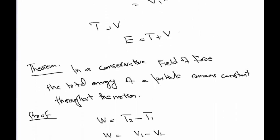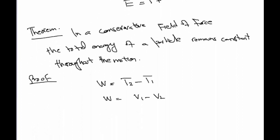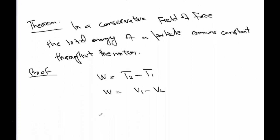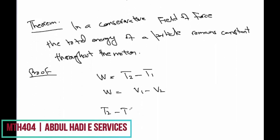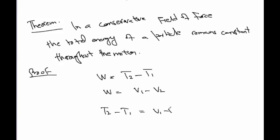This work done equals v1 minus v2. We can write the equations as t2 minus t1 equals v1 minus v2, which gives t1 plus v1 equals t2 plus v2. This proves that the total energy at any two points p1 and p2 are equal — the principle of conservation of energy is proved. Thank you.